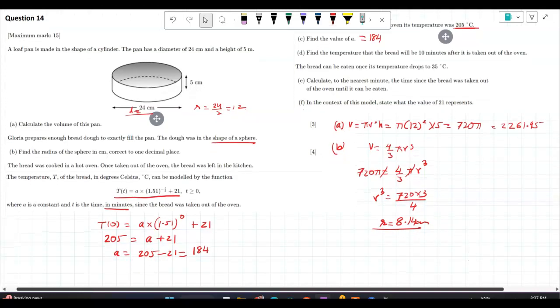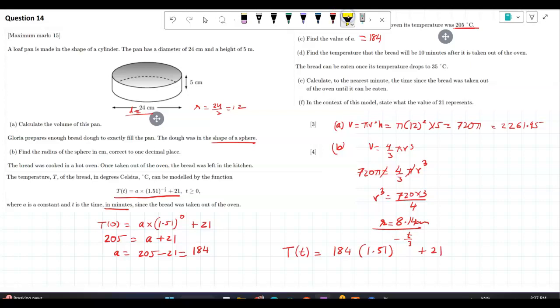Now put that 184 in the model. So what does the model become? T at any time t will be 184 into 1.51 raised to minus t over 3 plus 21. I'm putting the value of a back. I got the value of a using the initial condition. I'm putting this value of a back in this model. So then I'll be able to find a temperature at any time t. Now I get a complete model with only time and temperature as my variable.